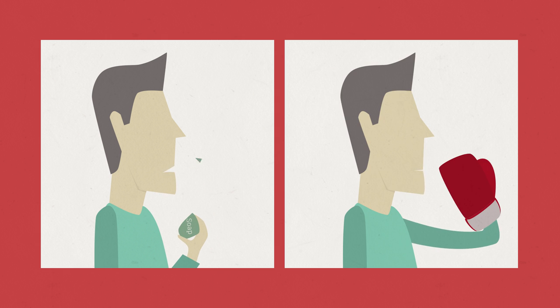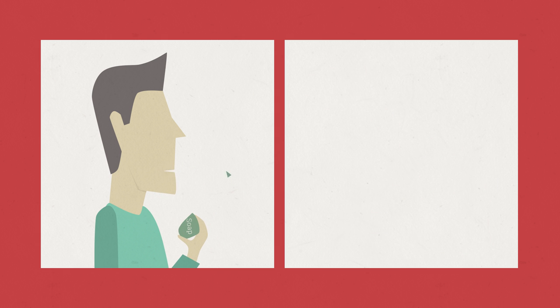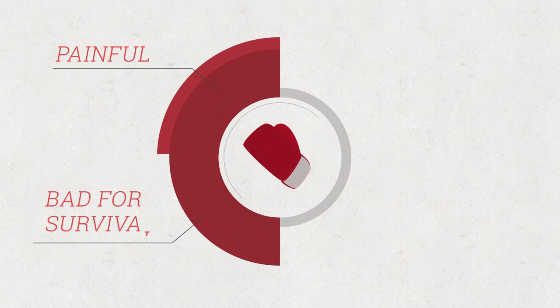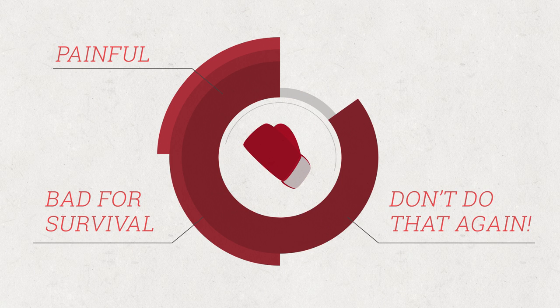Now, there are some things that will not cause the release of dopamine, like eating soap or punching yourself in the face. The brain knows that these things are not good, and therefore does not release the pleasurable dopamine because your brain does not want you to do it again.